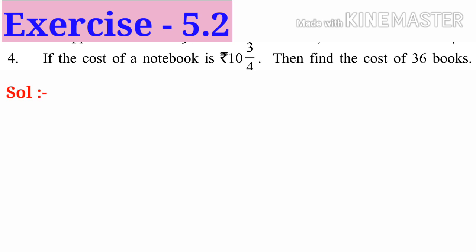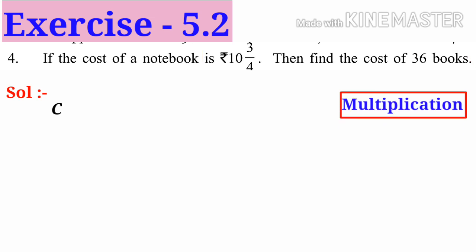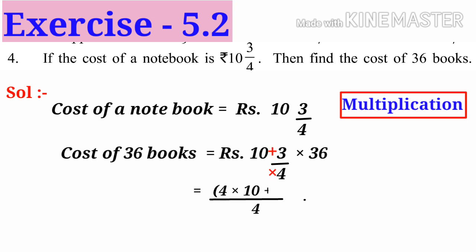Fourth problem: if the cost of a book is 10 and 3/4 rupees, find the cost of 36 books. The cost of 36 books is 10¾ × 36. Convert the mixed fraction to an improper fraction: 4 × 10 + 3 = 43, giving 43/4 × 36/1. By simplification, divide by 4 to get 1 and 9. So 43 × 9 = 387 rupees.